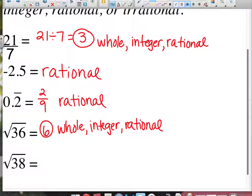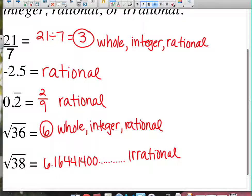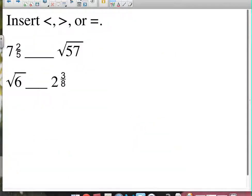How about the square root of 38? When you punch that into your calculator, you get 6.16441400... — it never stops, never repeats, never ends. That makes it irrational. So you'll have some problems in class where you have to try to identify all the sets to which numbers belong.